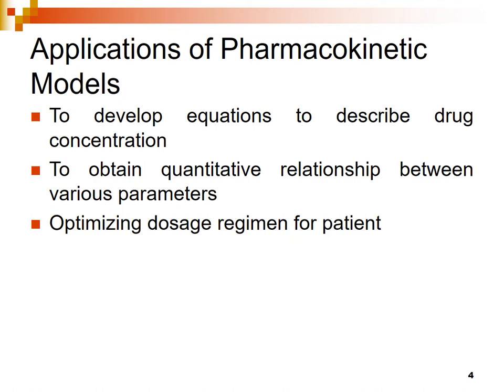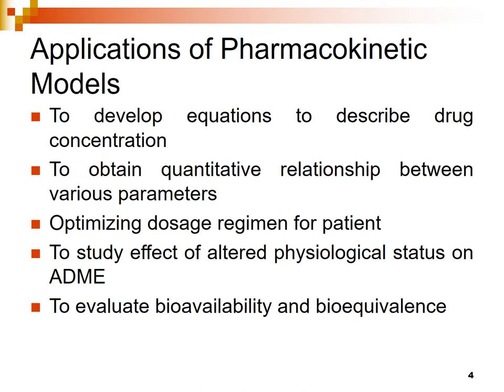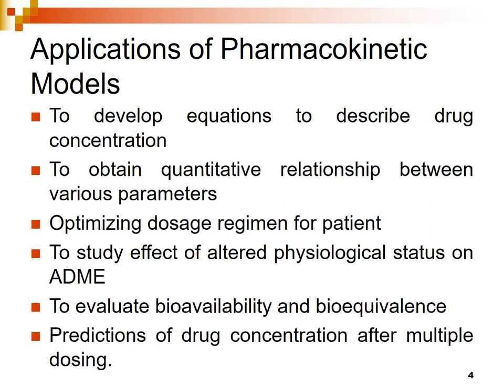Next application is optimizing a dosage regimen for a patient. We can use pharmacokinetic models to design a dosage regimen — that is, dose and dosing frequency — for individual patients or for general populations. We can also study the effect of altered physiological status on ADME, such as the effect of different disease conditions like liver disease or kidney disease on the ADME of the drug. We can evaluate bioavailability and bioequivalence for different drug products from different manufacturers, and predict drug concentration after multiple dosing by doing single dose studies.